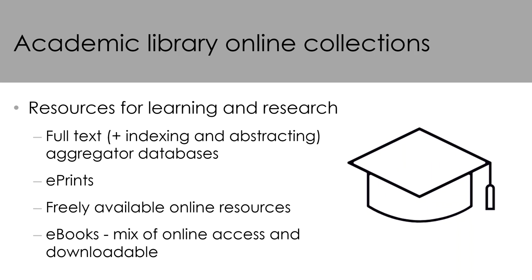Let's look at various types of online collections. These collections are informed and formed by the style of library and the type of users accessing the collection. In an academic library context, resources in the online collections tend to be focused on supporting learning and research. This might include full text aggregated databases, as well as indexing and abstracting databases which don't contain full text; e-prints, which is usually the institutional repository; freely available online resources such as a link to the Australian Bureau of Statistics site; and e-books in both online accessible and downloadable formats.